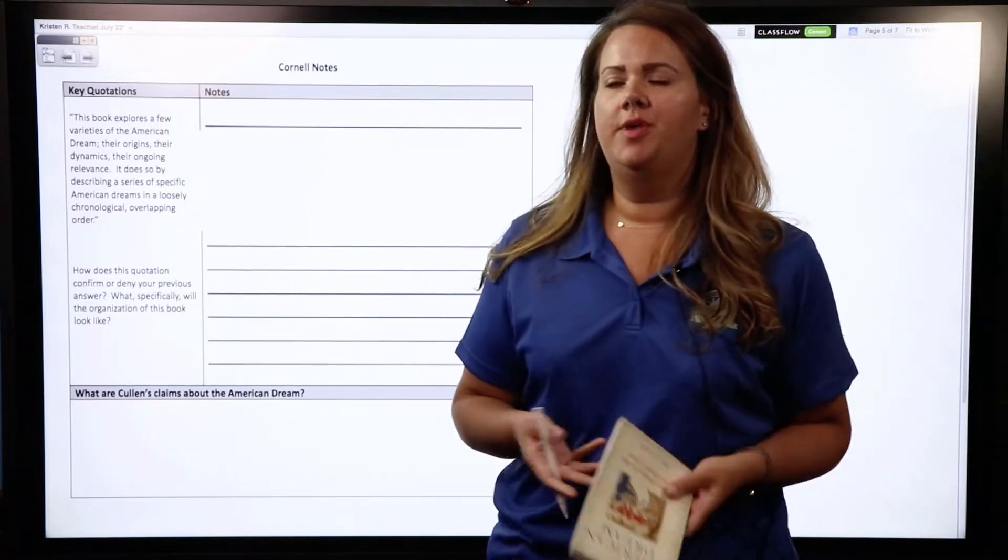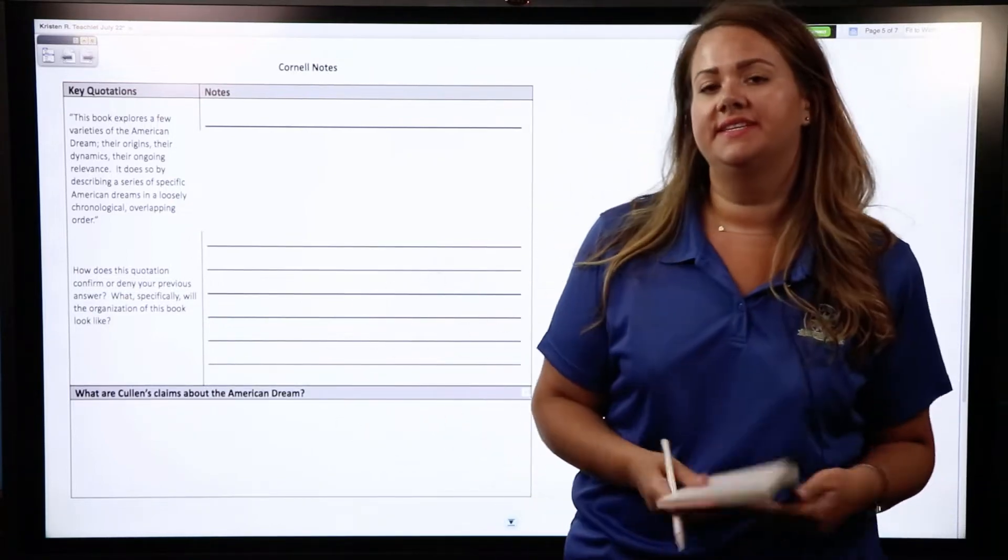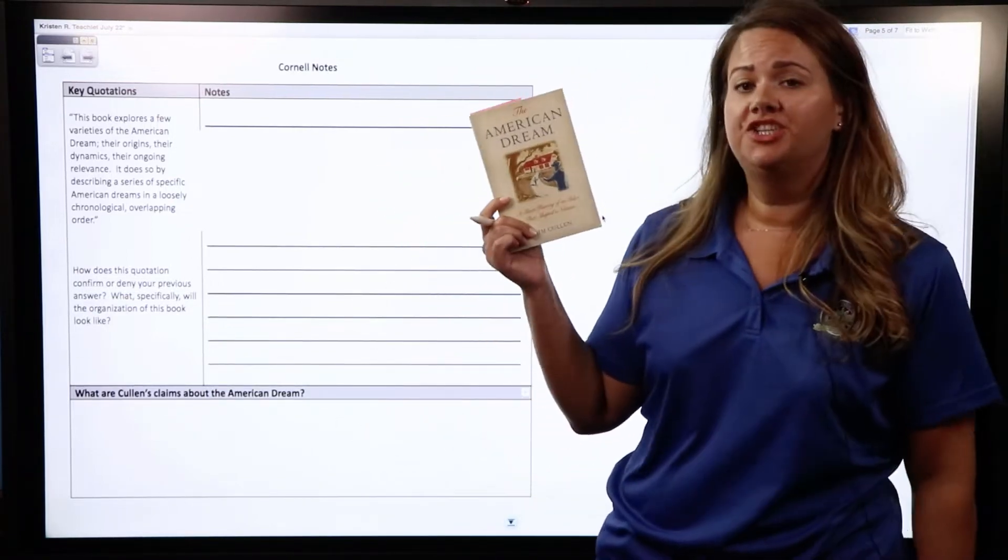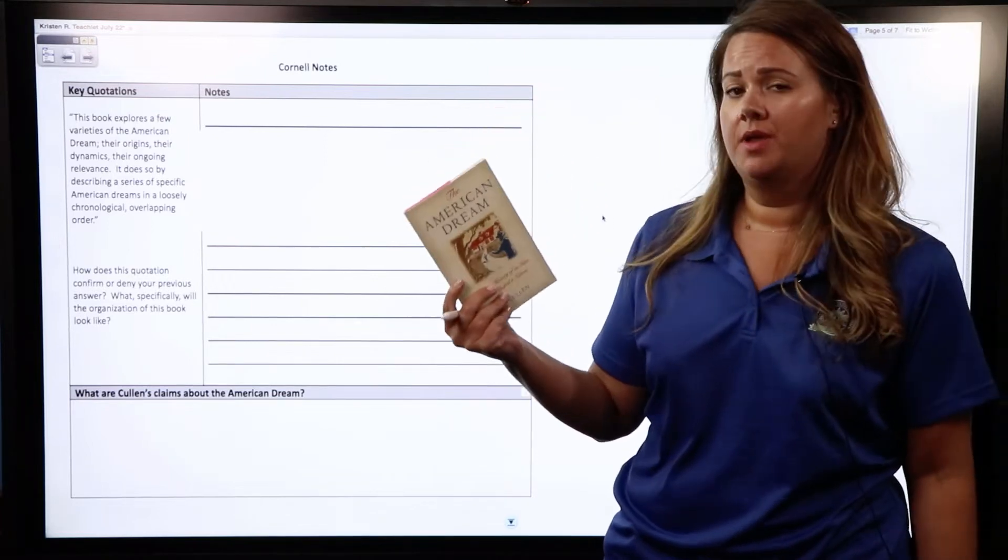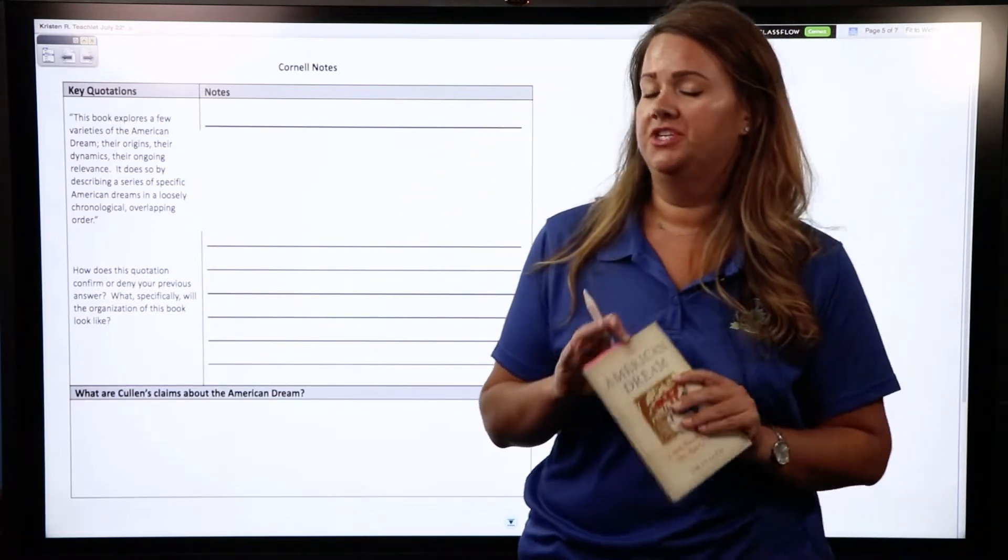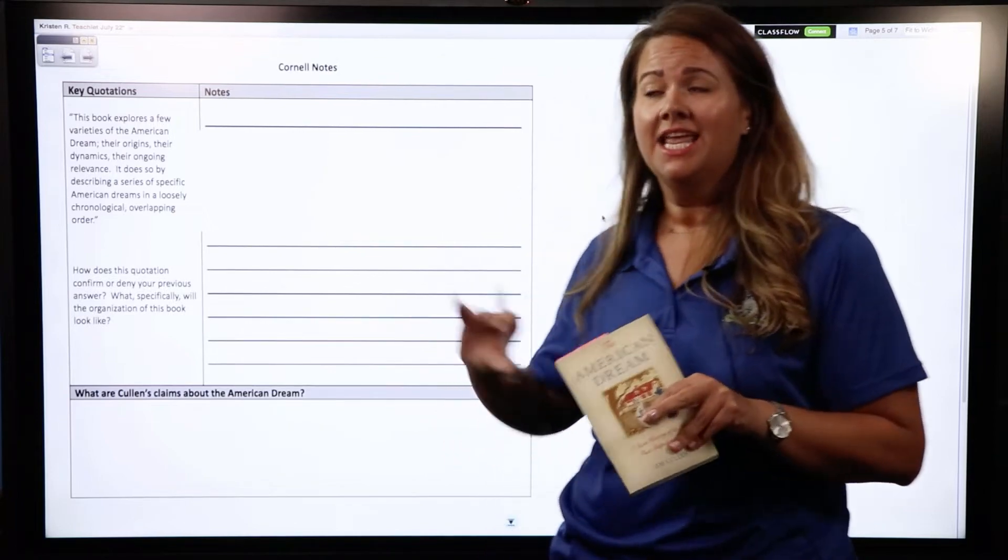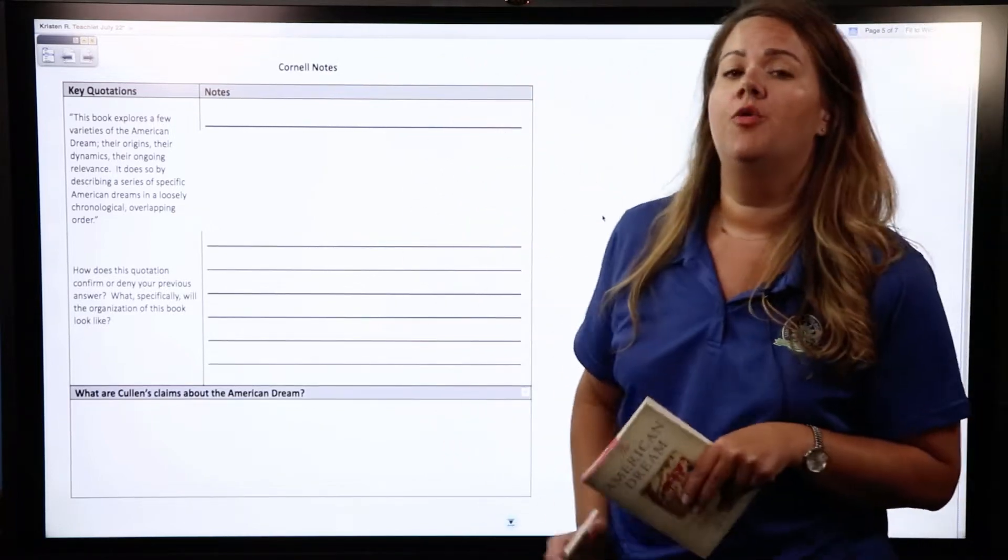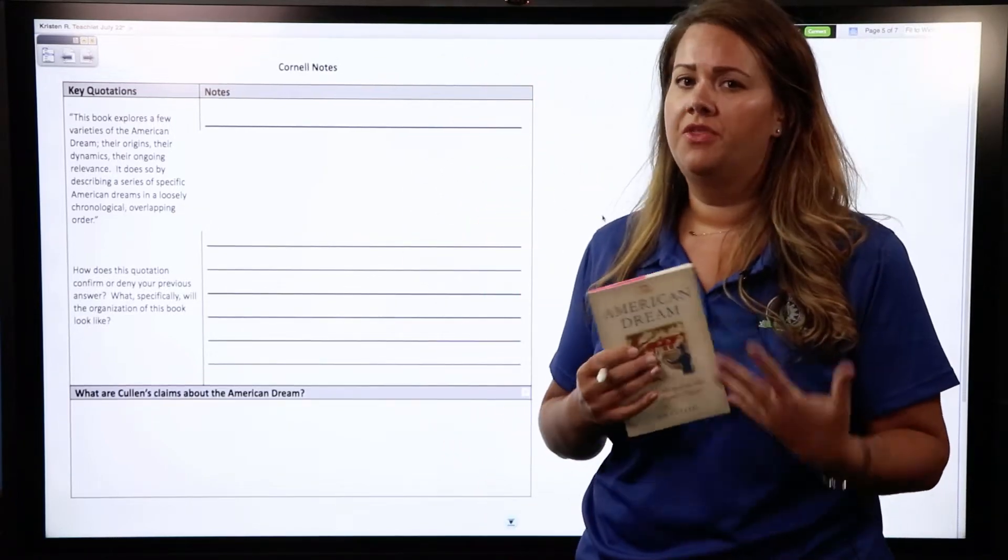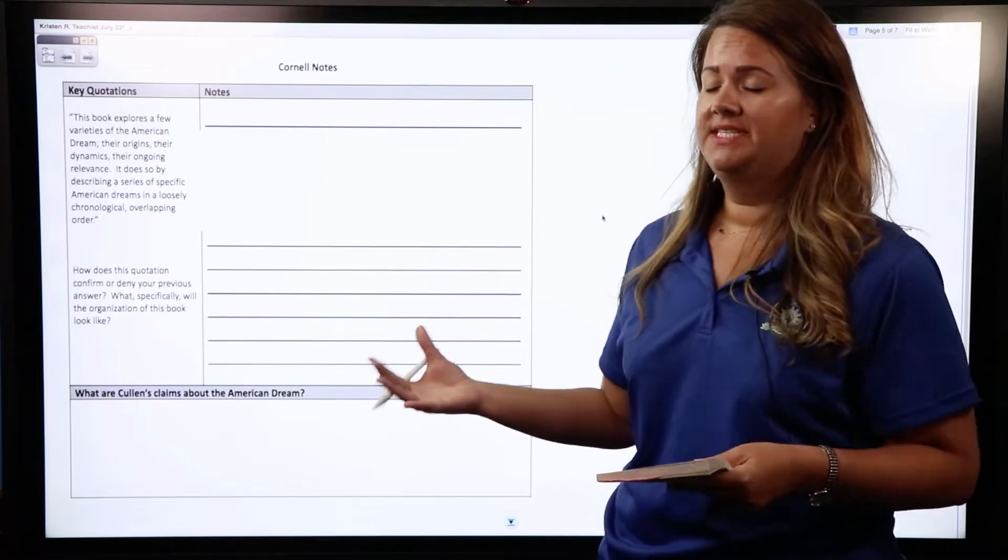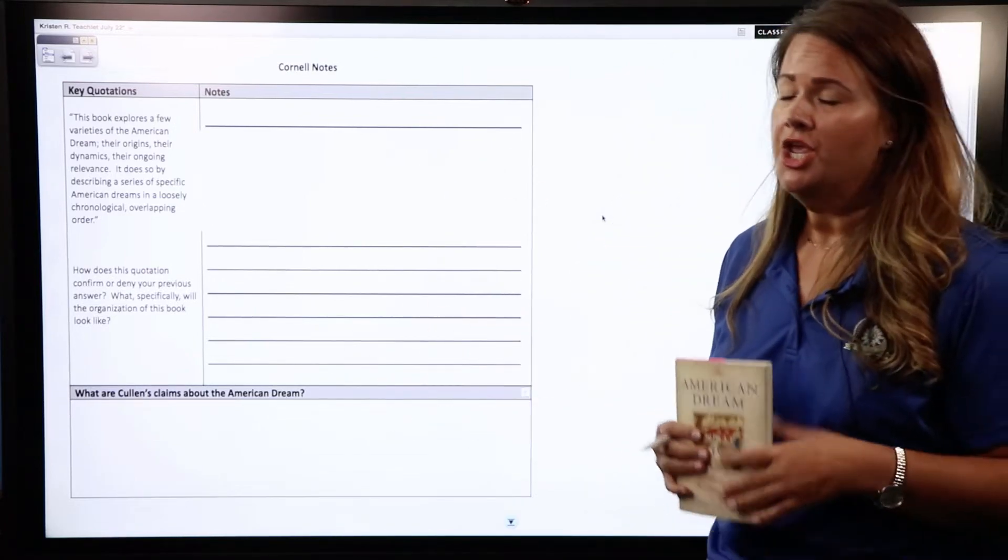Hey guys, today we're going to be using our Cornell notes to discuss the introduction to Jim Cullen's The American Dream. Right now you are working with just the introduction of this text and this document is going to help you to really hone in on the really important things, some big takeaways from the introduction.